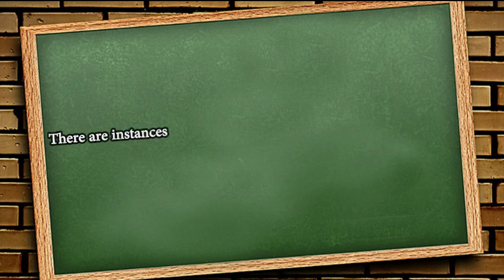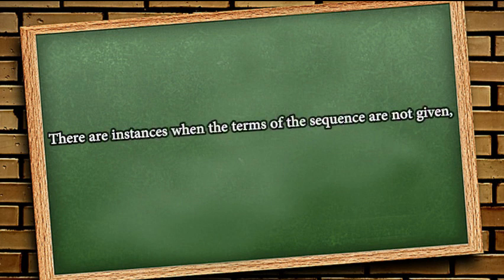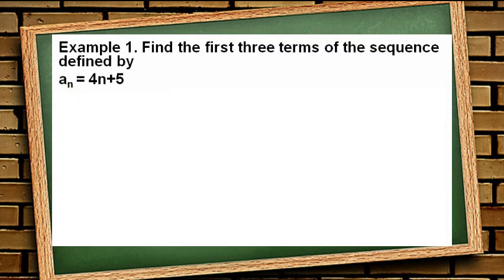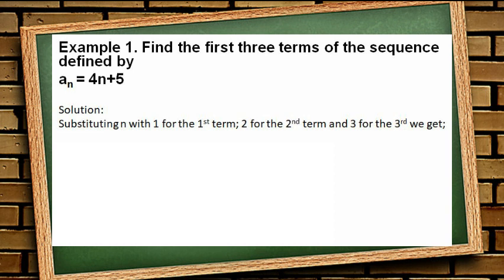There are instances when the terms of the sequence are not given but only the general rule or recurrence relation. Example number 1: Find the first 3 terms of the sequence defined by a of n equals 4n plus 5. Dito, binigay ang general rule, yung equation or yung tinatawag natin na recurrence relation. At ang hinahanap ay ang first 3 terms o yung unang tatlong terms ng sequence. Dito ay kailangan lang natin isa-isahin na isubstitute ang 1 sa n para sa first term, 2 naman pag ang hinahanap na ay ang second term at 3 pag third term. So ang makukuha natin na unang tatlong terms ay 9, 13, at 17.